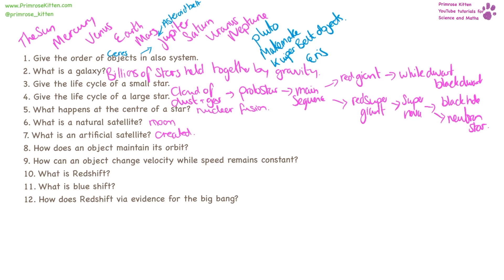How does an object maintain its orbit? For that to happen it actually needs to be travelling really fast. How can an object change velocity while speed remains constant? That is when it's changing direction or moving in a circle.